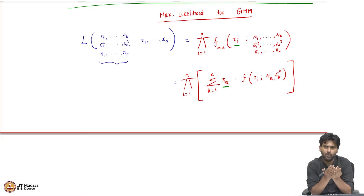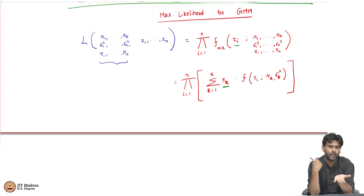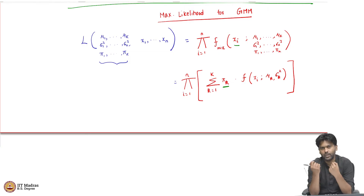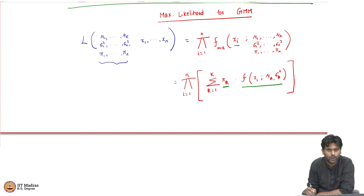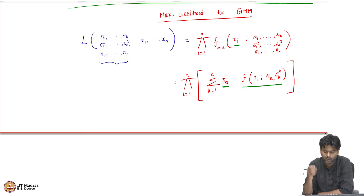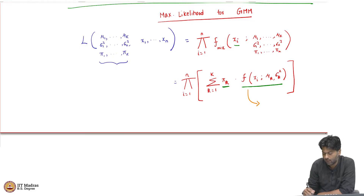What is the chance that x_i comes from cluster 1? Two things should have happened: the die should have fallen on face 1, with probability pi_1, and this point should have been generated according to a Gaussian with mean mu_1 and variance sigma squared 1. These two things have to happen together — the point was chosen from mixture k, and then mixture k itself generates this point according to that Gaussian density.